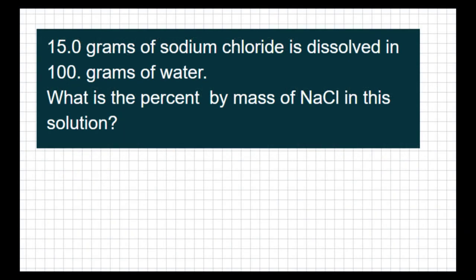When looking to find percent by mass, you have to do the mass of what you're looking for. So in this case, the sodium chloride is 15 grams. But you don't divide it by the mass of the other thing, you divide it by the total mass. So my total mass is 115 grams.